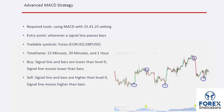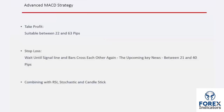A sell order can be placed when bars and signal line are above level zero and the signal line moves higher than the bars. Take profit value is between 22 and 63 pips, based on other confirmations and the type of candle pattern on the entry price.